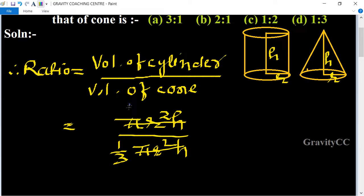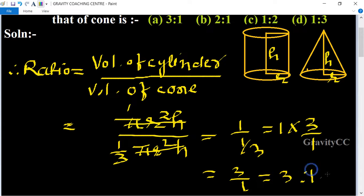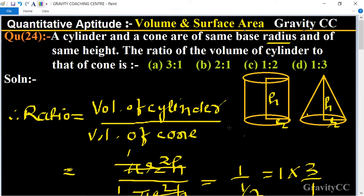So equal to 1 upon 1/3 equal to 1 multiply 3 upon 1, so it is 3 upon 1. So equal to 3 ratio 1, which is the required answer. So option A is the correct answer.